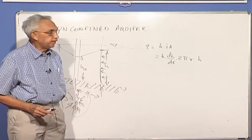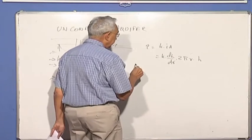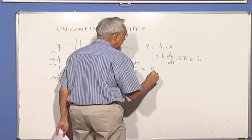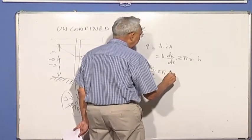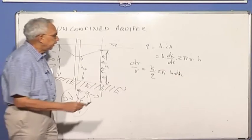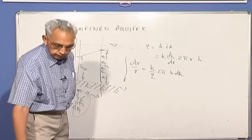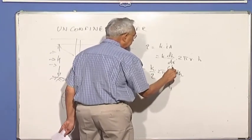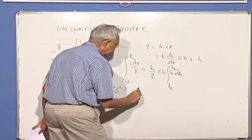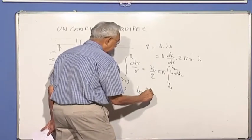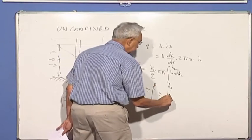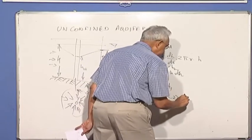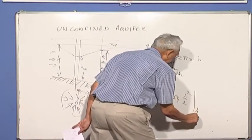So now you can easily integrate again. I can take Q down there, so DR by R is equal to K by Q 2 pi H DH. Now we integrate again, RW, any distance, and we integrate this from H1 to H2. You will get again similar expression, log to the base E of R is equal to K by Q into 2 pi, H2 square minus H1 to H2.